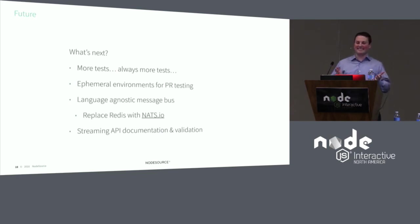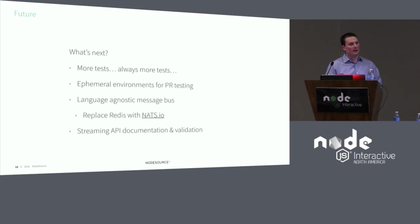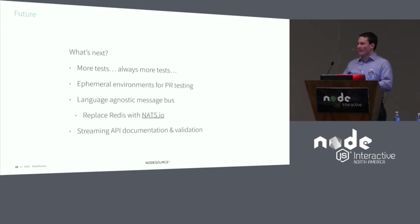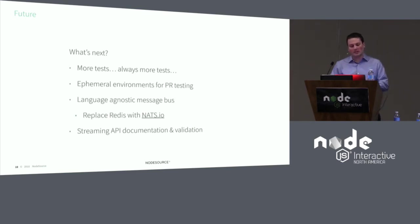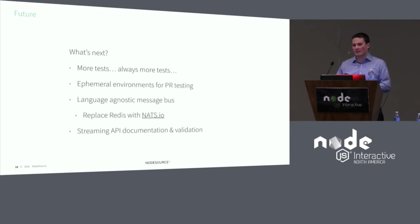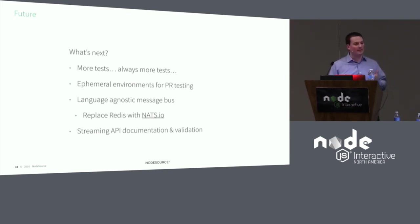So what's next? More tests — always need more tests, and frankly we have very few right now. We're also experimenting with ephemeral environments for PR testing: when a new PR comes in for one of our modules, we want to spin up a complete functioning instance of Cloudy Time Machine with only that one PR change. We're also looking to switch to a language-agnostic message bus — currently we use a library called Bull built on Redis, which works well but is Node.js-specific. We want to replace it with NATS, a message bus system I've been following for a long time. Finally, we'll dive deeper into streaming API documentation and validation.